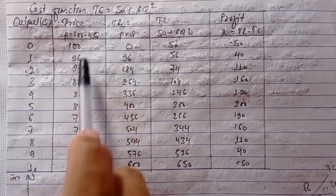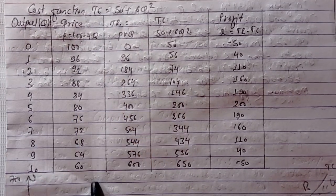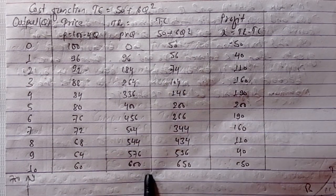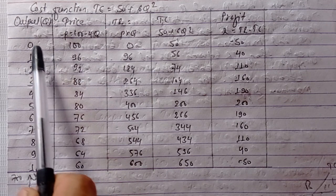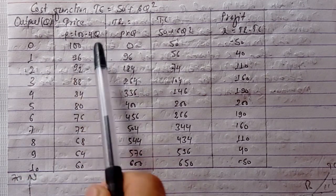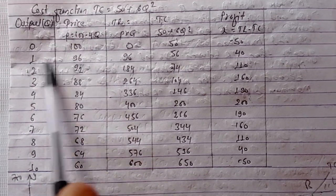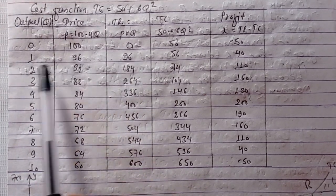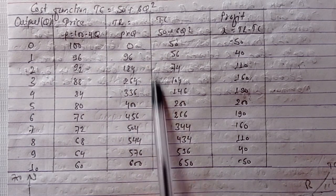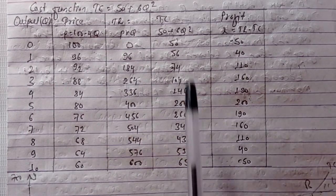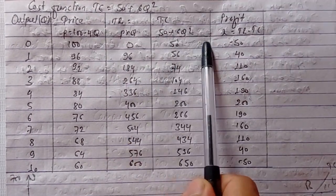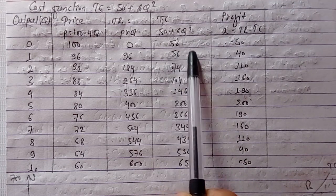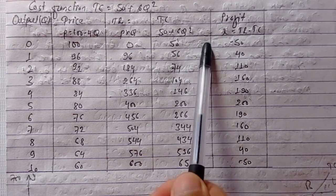TR is total revenue: TR equals price into quantity, that is P times Q. The price function gives TR equals 100Q minus 4Q squared. TC is total cost, given as 50 plus 6Q squared. At Q equals 0, TC equals 50 plus 0, which is 50.